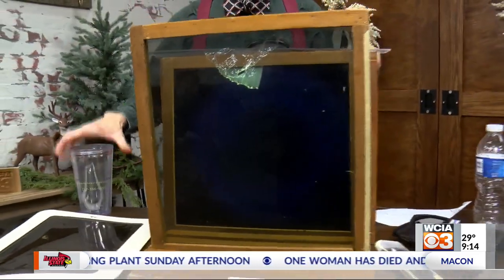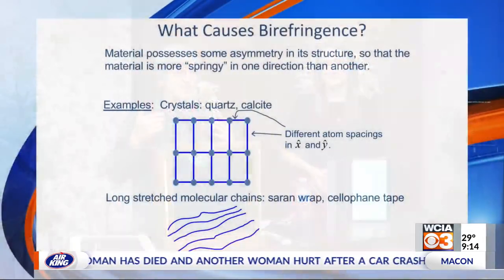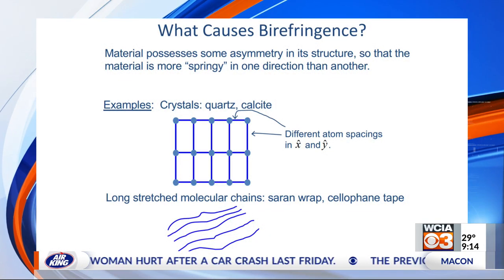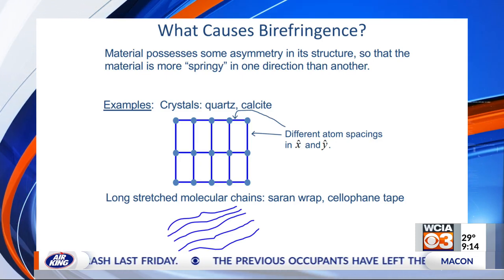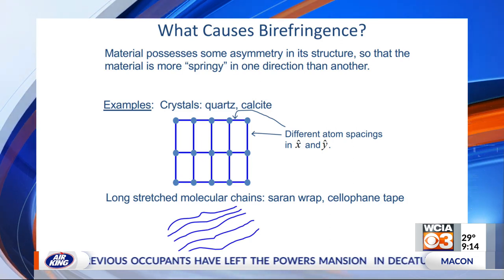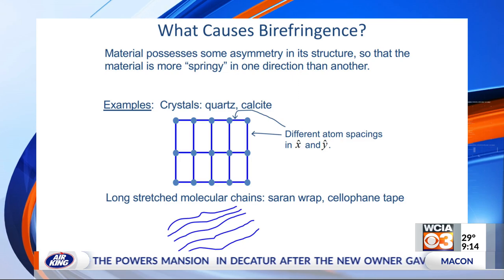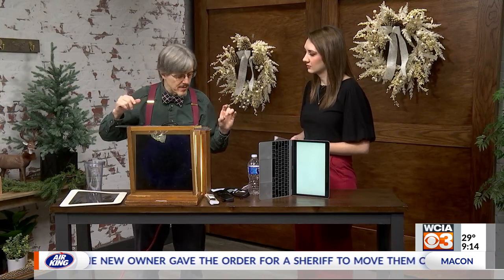What is actually causing this birefringence? There's some sort of asymmetry in the material. For example, it might be that it has a crystal structure that's not symmetric — like rectangular — so things that are oscillating along where the atoms are more closely spaced will have different polarization than if it goes along the direction where they're further apart. Or if we have something like saran wrap where we can do a stretch — I have some other demos of that.